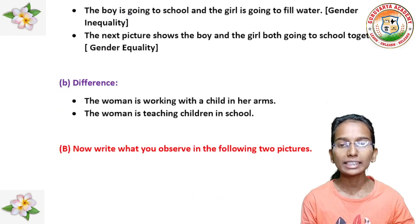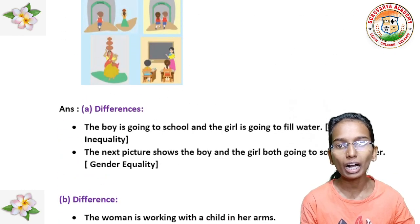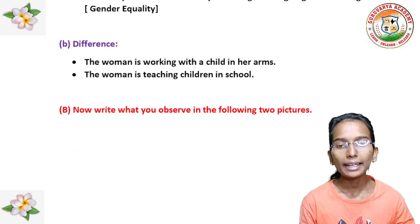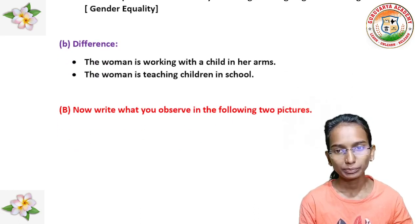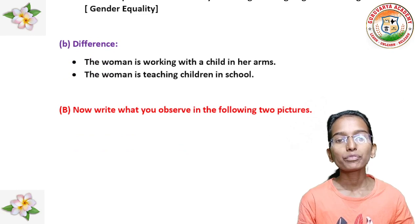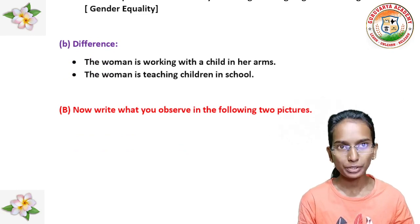Next difference: the woman is working with a child in her arms. And in the second picture, the woman is teaching children in the school. Now write what you observe in the following two pictures.